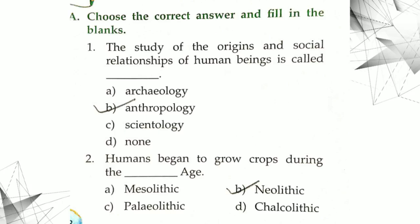So we have completed our chapter. Let's see the book activity. First is choose the correct answer and fill in the blank. First, the study of origins and social relationship of human beings is called anthropology. Anthropology is the study of origin and social relationship of human beings.